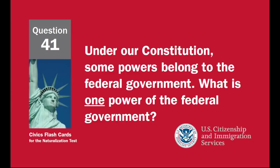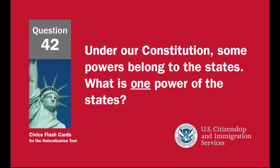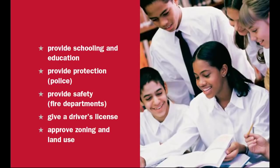Under our Constitution, some powers belong to the federal government. What is one power of the federal government? To print money, to declare war, to create an army, to make treaties. Under our Constitution, some powers belong to the states. What is one power of the states? Provide schooling and education, provide protection, police, provide safety, fire departments, give a driver's license, approve zoning and land use.